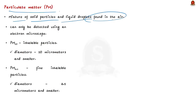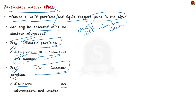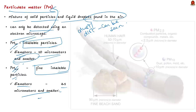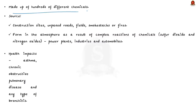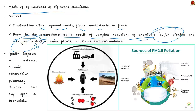Some particles such as dust, dirt, soot, or smoke are large enough to be seen with the naked eye, while other particles are so small that they can only be detected using an electron microscope. Particulate matter includes PM10 and PM2.5. PM10 are inhalable particles with diameters generally 10 micrometers and smaller, and PM2.5 are fine inhalable particles with diameters generally 2.5 micrometers and smaller. These particles can be made up of hundreds of different chemicals, some emitted directly from sources such as construction sites, unpaved roads, smokestacks, or fires.